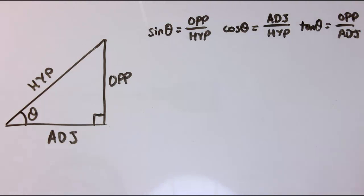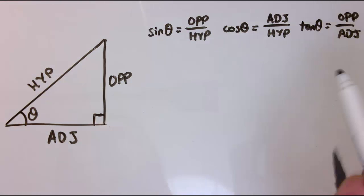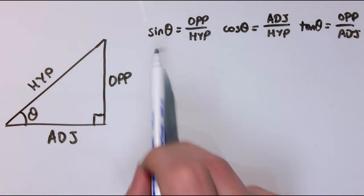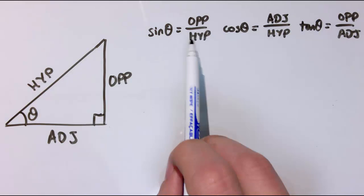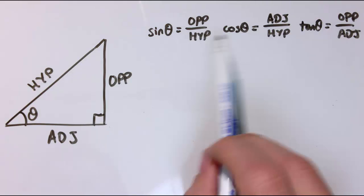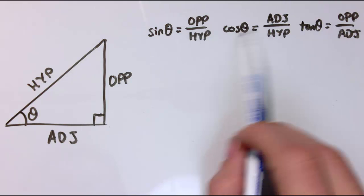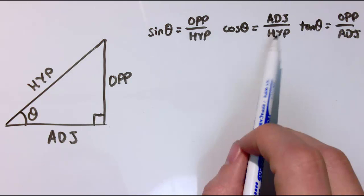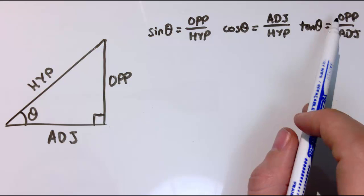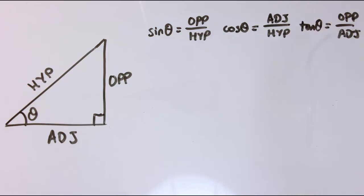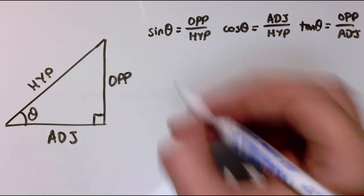In this video I'm going to prove two really useful trigonometric identities. We start with these trig formulae: sine theta is the opposite over the hypotenuse, cos theta is the adjacent over the hypotenuse, and tan theta equals the opposite over the adjacent. There are two really useful identities we're going to get here.